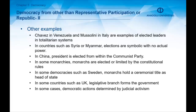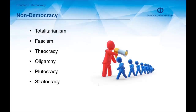In some countries, democratic actions are determined by judicial activism — courts shape democratic behavior and political events. There are also forms of non-democracy. The first is totalitarianism, where all power and government functions are centralized at the hands of a single ruling elite. A single party holds all of the power and generally eliminates other political parties. We can find totalitarian systems for instance in Nazi Germany or in Franco's Spain.